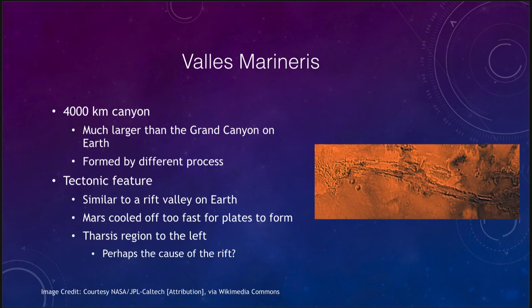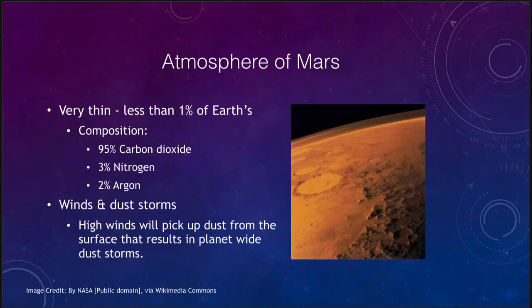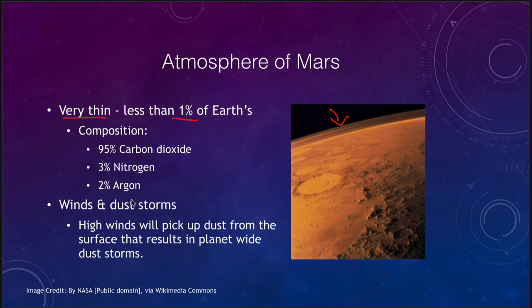Mars does have an atmosphere as well. It is an extremely thin atmosphere — less than one percent of the Earth's. We can see it a little bit in images at the edge where it's slightly hazy, but it is very thin. So even if it had the same composition as the Earth's, you would be unable to breathe because the pressure would just be too low. However, its composition is also nothing like the Earth's — it is 95% carbon dioxide, 3% nitrogen, and 2% argon, with no sign of things like water or oxygen in the atmosphere.